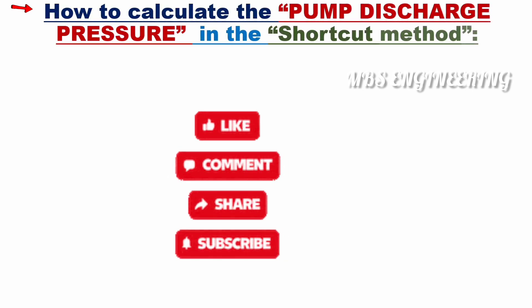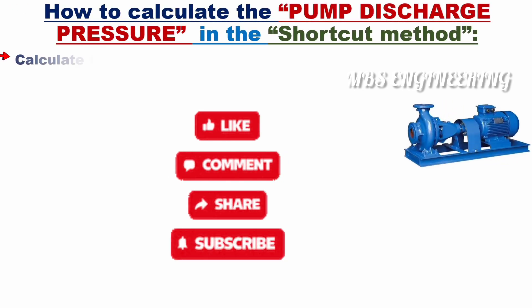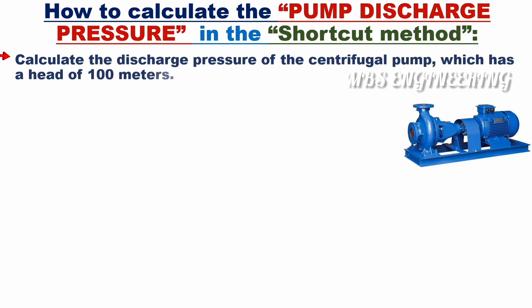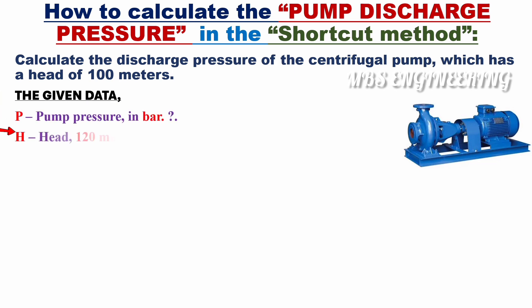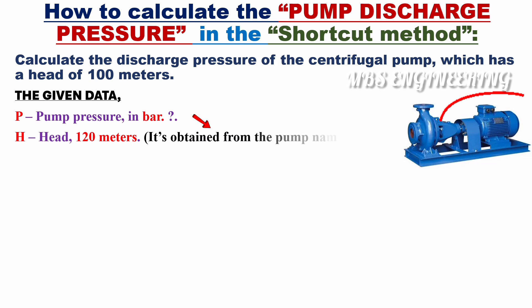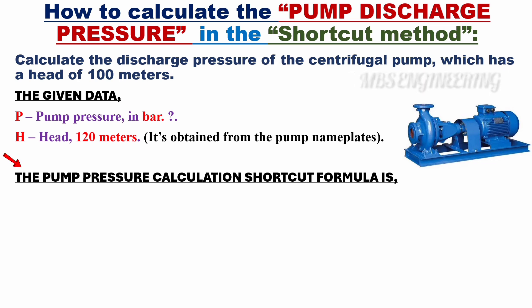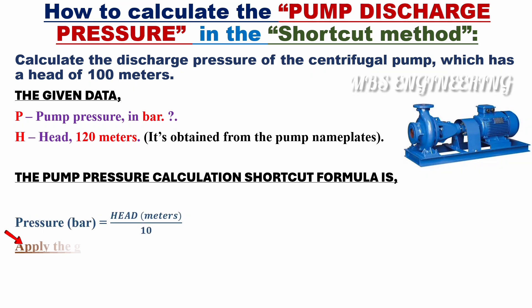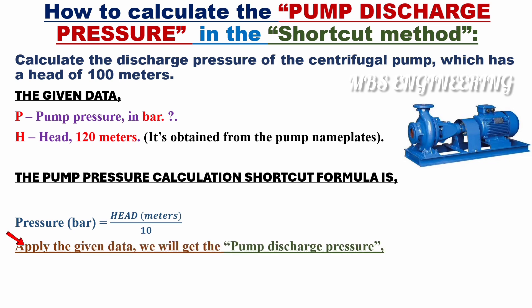Now we will calculate the discharge pressure of a centrifugal pump which has a head of 100 meters. Given data: H is 100 meters, obtained from the pump nameplates. Applying the shortcut formula — pressure in bar equals pump head divided by 10 — we get: pressure equals 100 divided by 10.